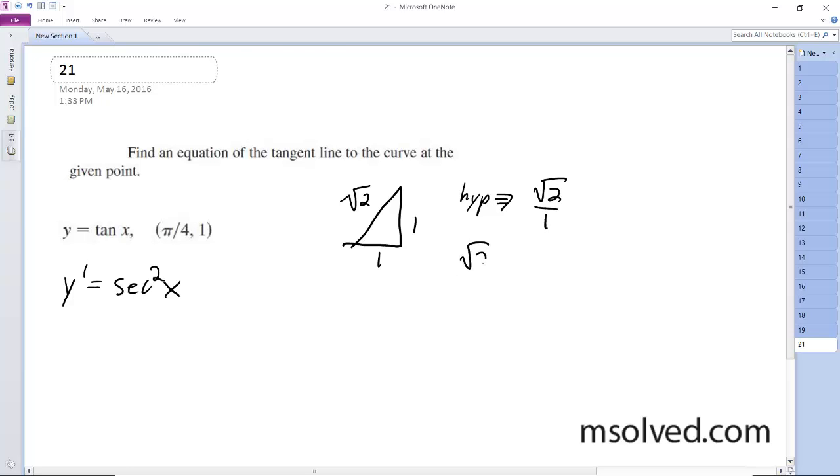So secant squared is root 2 squared. So y prime of pi over 4 is going to be equal to 2.